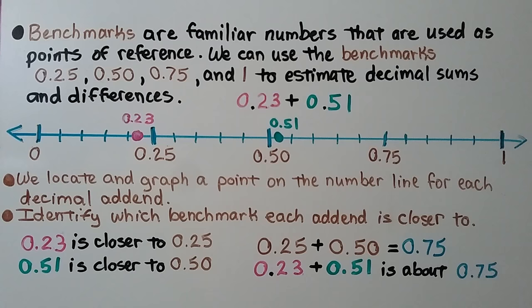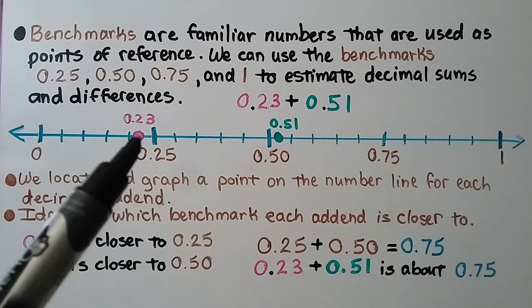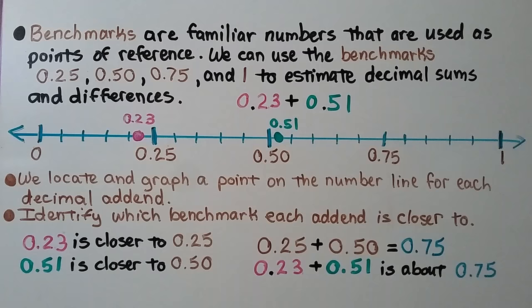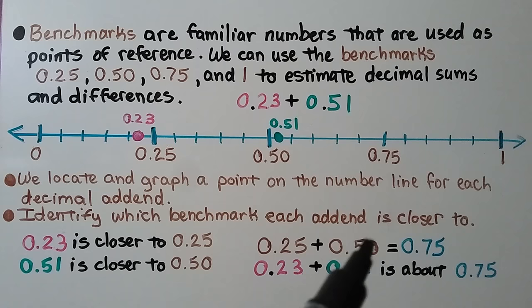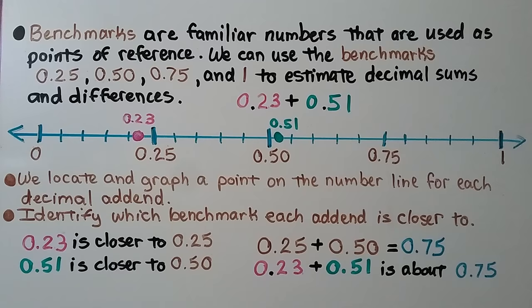Benchmarks are familiar numbers used as points of reference. We can use the benchmarks 25 hundredths, 50 hundredths, 75 hundredths, and one whole to estimate decimal sums and differences. We need to add 23 hundredths plus 51 hundredths. We locate and graph a point on the number line for each decimal addend. Here is 23 hundredths, just below 25 hundredths; and here is 51 hundredths, just above 50 hundredths. We identify which benchmark each addend is closer to, then add 25 hundredths plus 50 hundredths and get 75 hundredths, so they are about 75 hundredths.